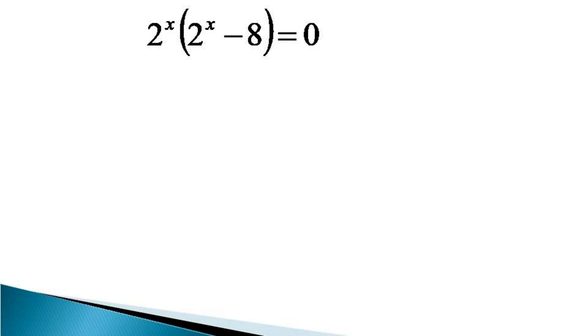This equation gives us two possible solutions. The first one is 2^x = 0, and the second one is 2^x - 8 = 0. As far as 2^x = 0, no finite value of x will make this equation true.